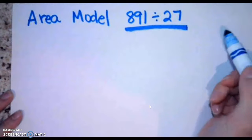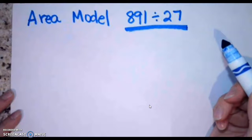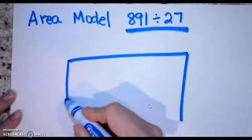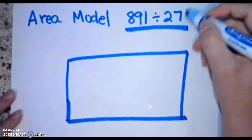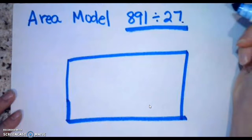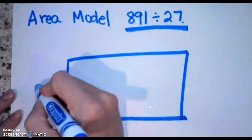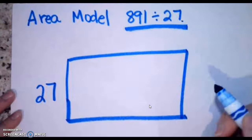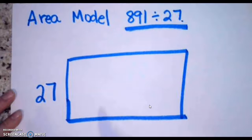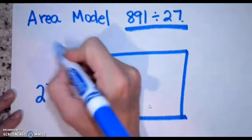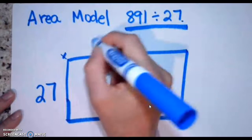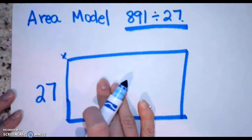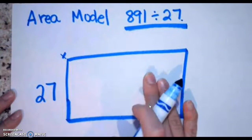I've got 891 divided by 27. I'm going to need to set this up as an area model, so I'm going to create a box. My divisor — that's the second number, the one that is doing the dividing — goes outside on the left-hand side, just like in the regular house method. So 27. I'm trying to figure out 27 times what number will give me an area of 891. That 891 should fill the inside.